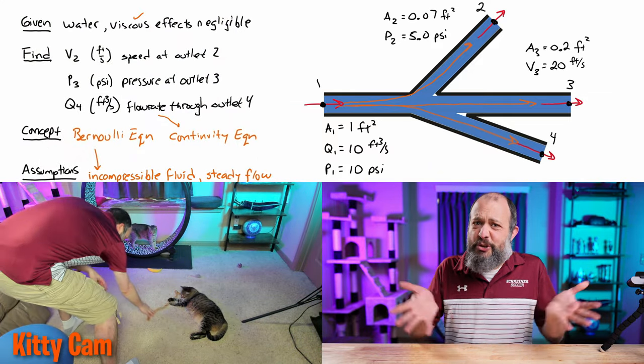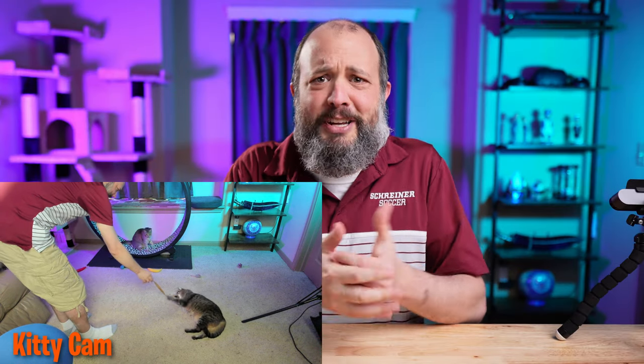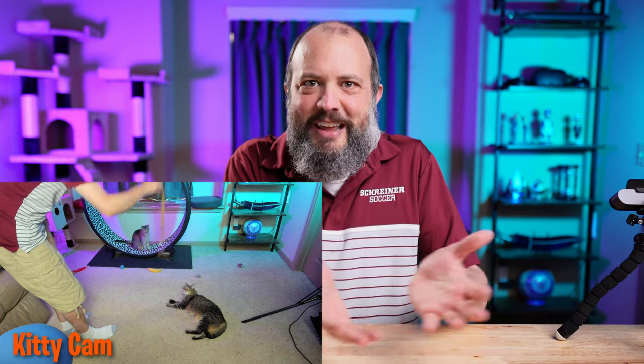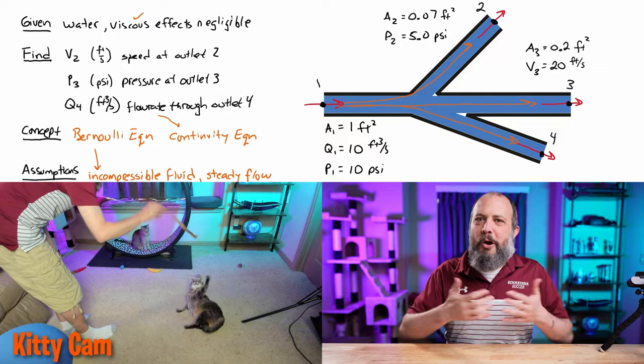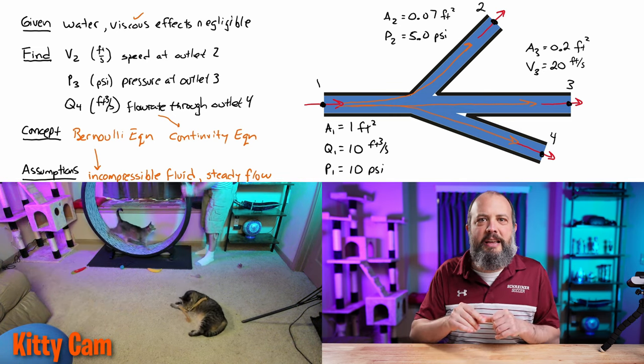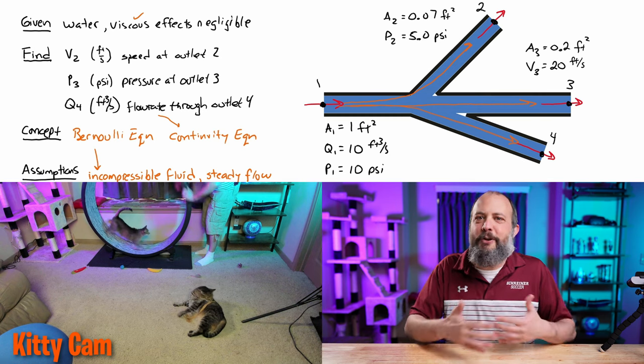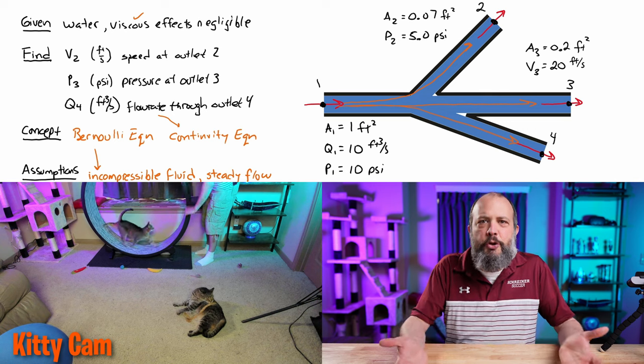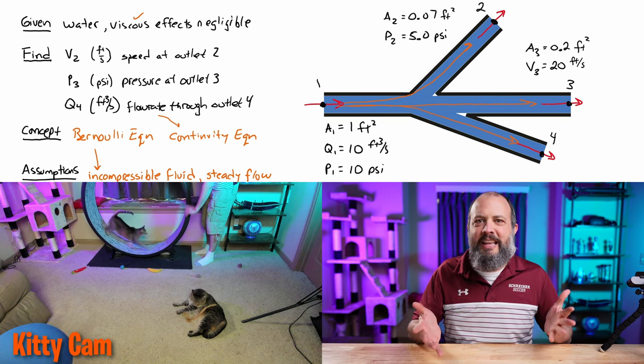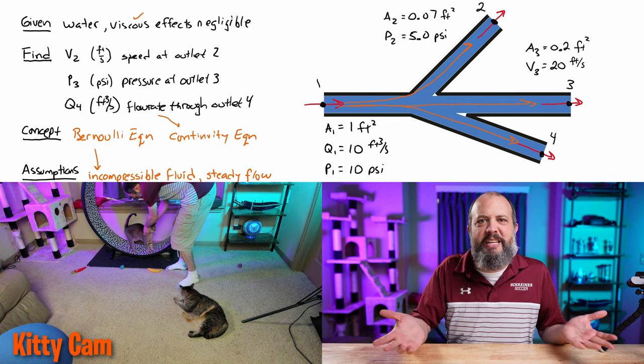And surprisingly, you can even use that assumption for gases. And that seems really strange because of course, gases are compressible. Think of an air compressor, right? But as long as the gas of air is moving at a relatively low speed, and as a rule of thumb, we'll say Mach 0.3 or around 200 miles an hour, go ahead and assume that it's incompressible. It'll lead to errors only maybe 1% as long as the speed is slow.